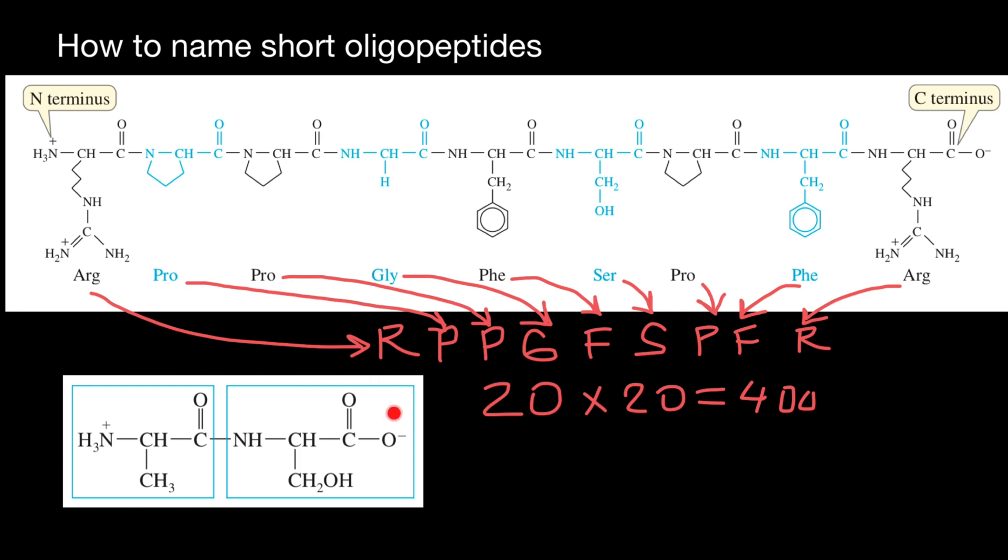Now let's take a look at this dipeptide. What is this amino acid? This is alanine. So this R group specifies which amino acid it is. And this is going to be just a backbone, which is the same in each amino acid. So let's write down the name of the first amino acid in this dipeptide. And this is going to be alanine. So alanine. And the second is going to be serine. So this is going to be serine.